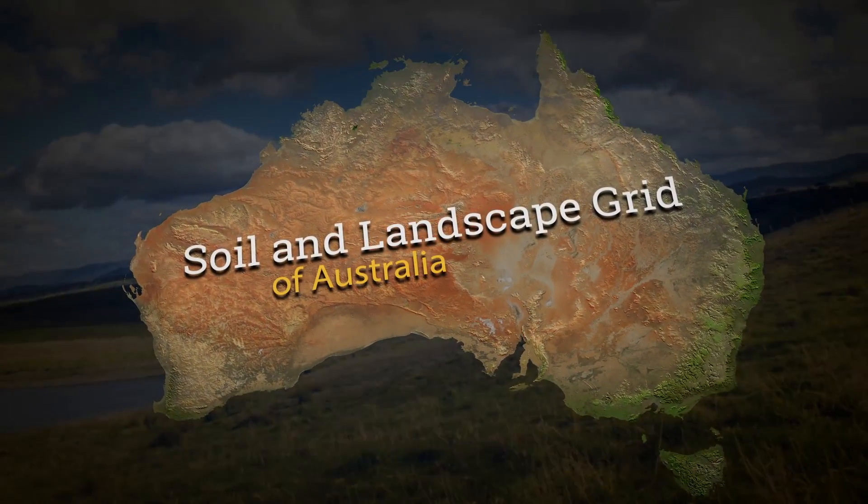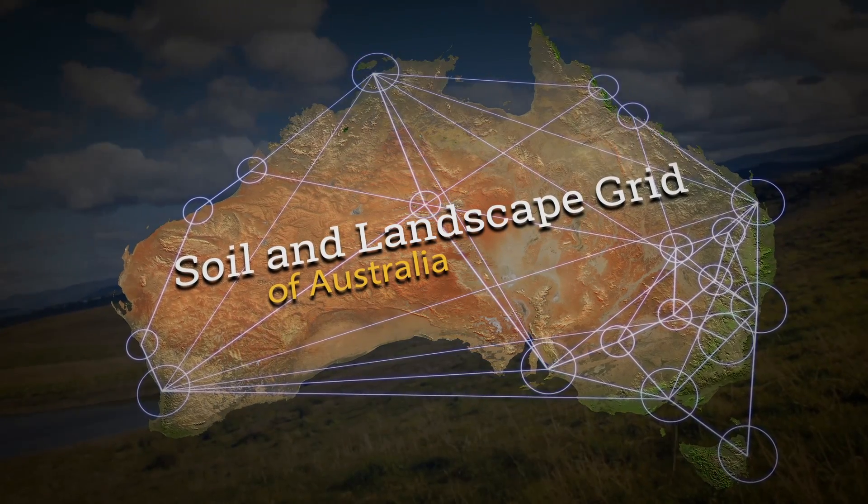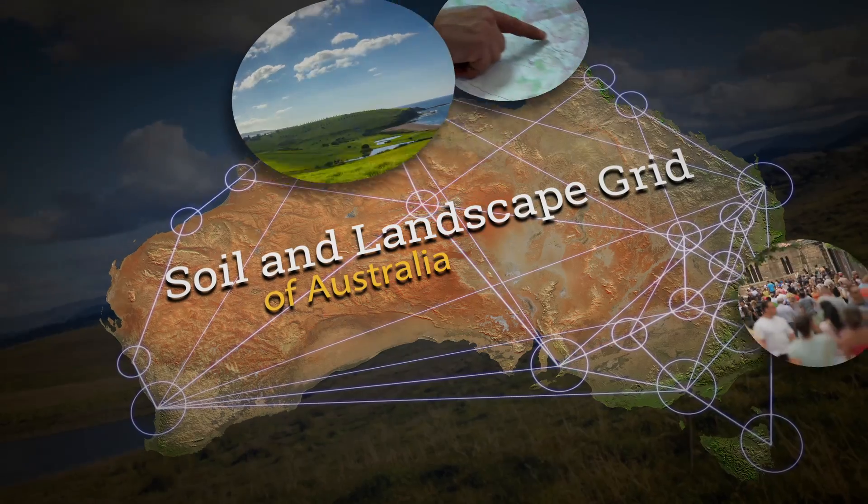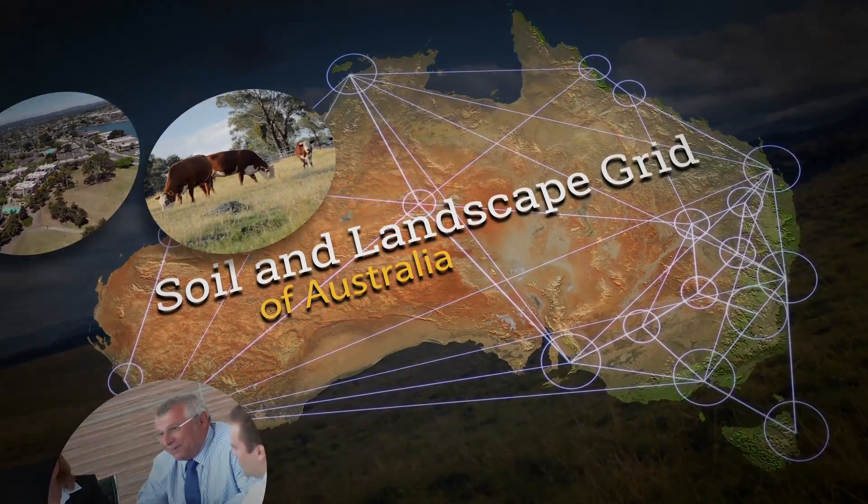The Soil and Landscape Grid is part of an Australian Government Research Infrastructure Network for the future policy and prosperity of this country. It opens the doors for land managers, communities and governments to answer important questions.